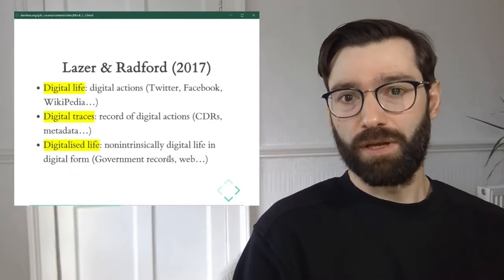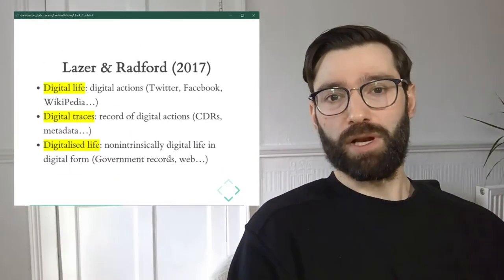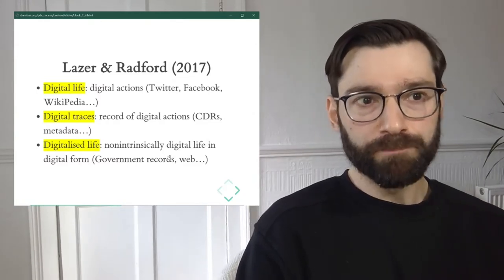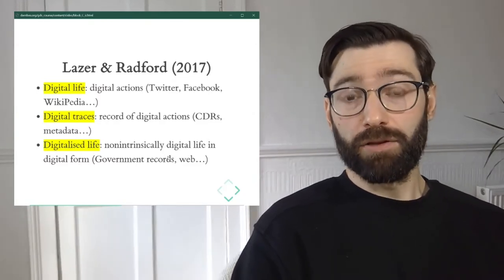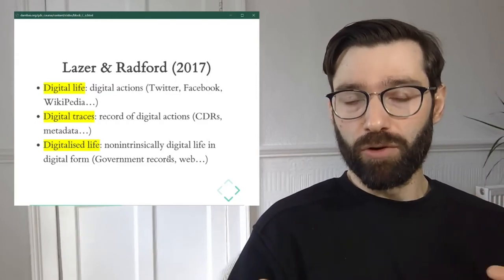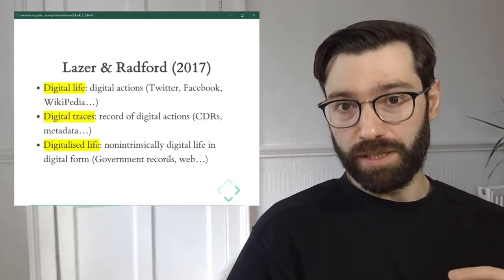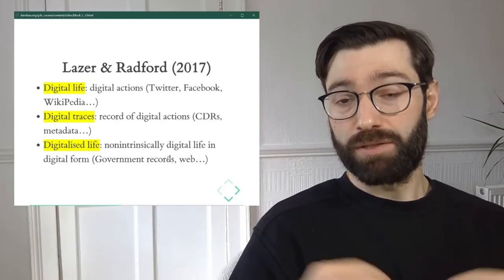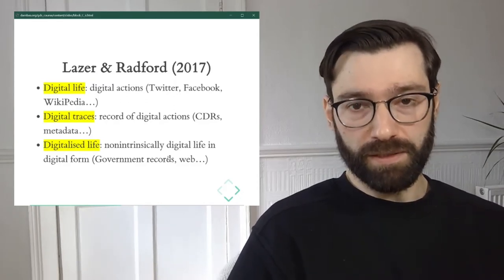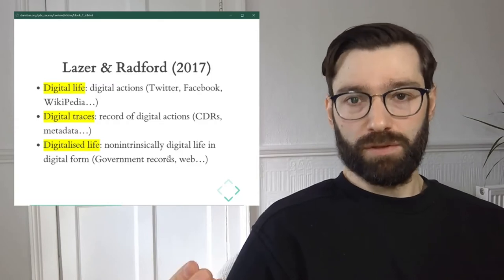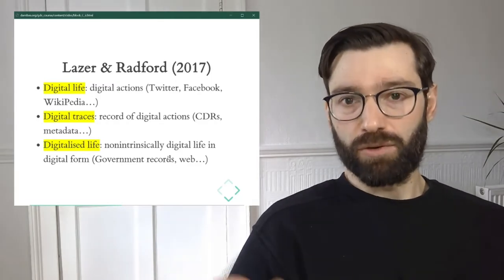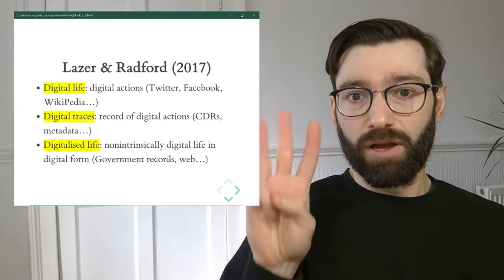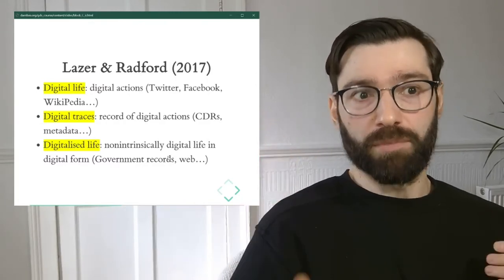The first categorization comes from a relatively recent paper from 2017 by David Lazer and Radford. They're talking about new forms of data in the context of sociology, but a lot of what they say really applies to most social sciences. They categorize new datasets, or big data as they call it, along three main types.